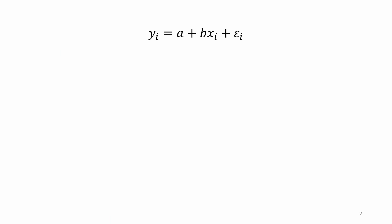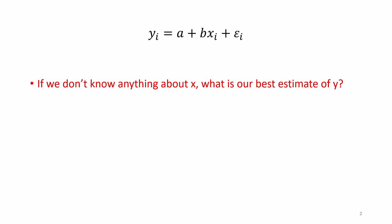Let's start by considering the standard regression equation y equals a plus bx plus epsilon, where y is the dependent variable — the outcome that we are trying to explain or predict — and x is the explanatory variable. In the case where we don't know anything about x, our best estimate of y would be the mean of y, referred to here as y bar.